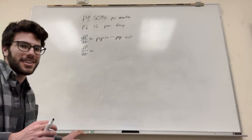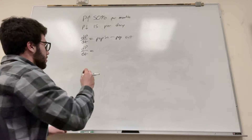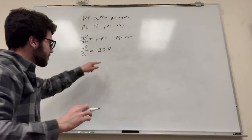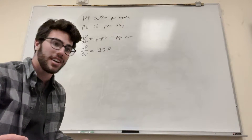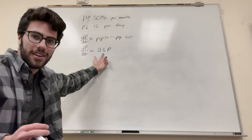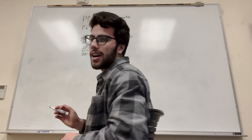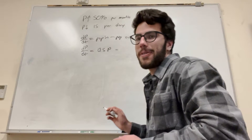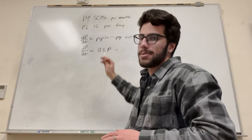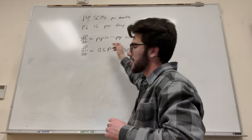50% per month means the population goes up 0.5 times the population. If the population is 100, it goes up 50. For population out, it's 15 per day, but we're working in months, so we assume a month is 30 days. Multiplying 15 per day times 30 days gives 450 per month. So our differential equation is dP/dt = 0.5P - 450.